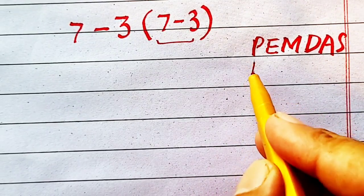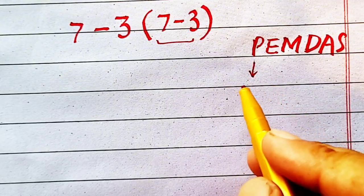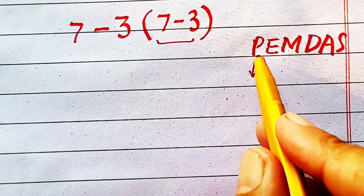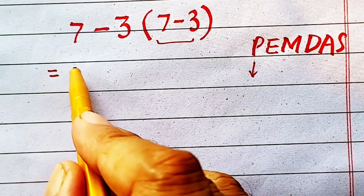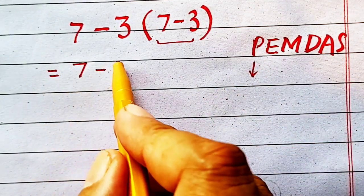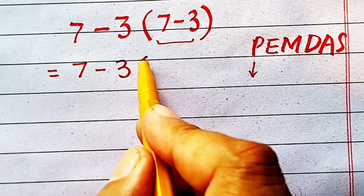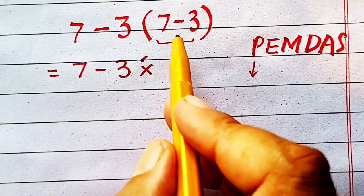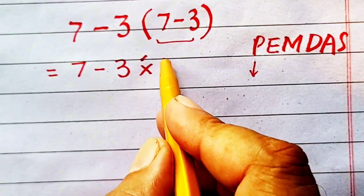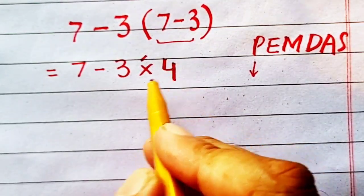First of all, we will solve the terms in parentheses. So, 7 minus 3, you can write here multiplication sign. 7 minus 3 will be equal to 4.